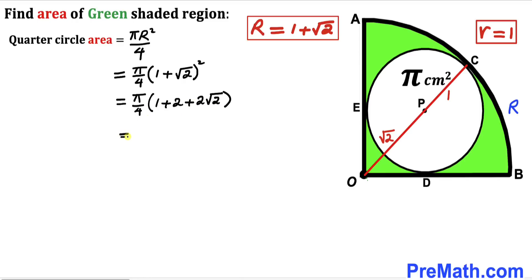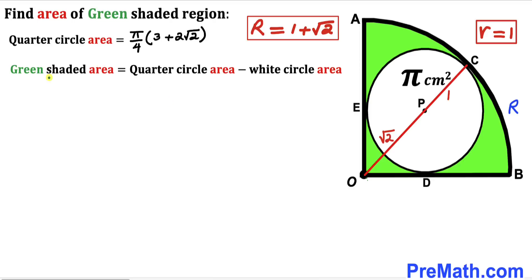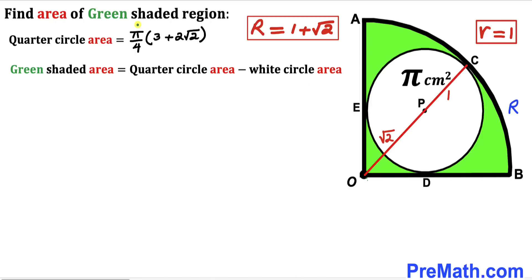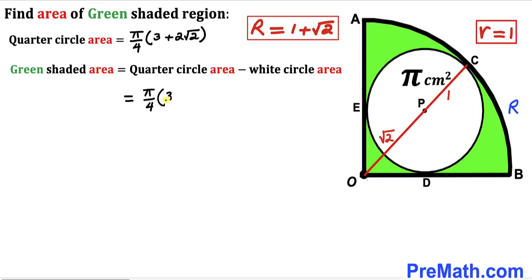Now for the final step, we calculate the area of the green shaded region. We know the green shaded region area equals the quarter circle area minus the area of the white circle. The quarter circle area is pi over 4 times (3 plus 2 times square root of 2), and the white circle area is pi. So the green area equals pi over 4 times (3 plus 2 times square root of 2) minus pi.